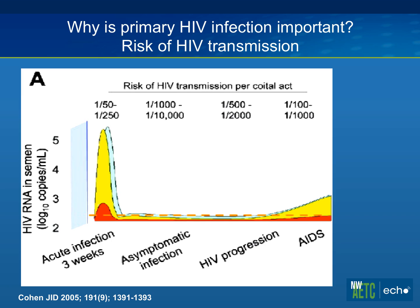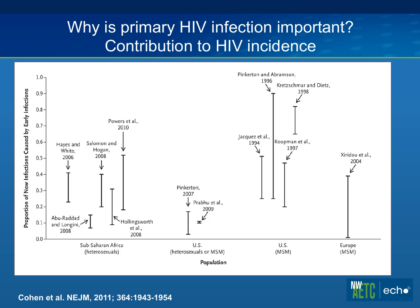Even when you control for viral load, there's probably a tenfold increase in transmission per sex act among people who have been recently infected. People ask how important it really is when primary infection is a very short period of time compared to the decades someone may be infected. This leads to the question of how important it is in terms of all transmission going on — what I call the magic question, because it really depends on your epidemic.